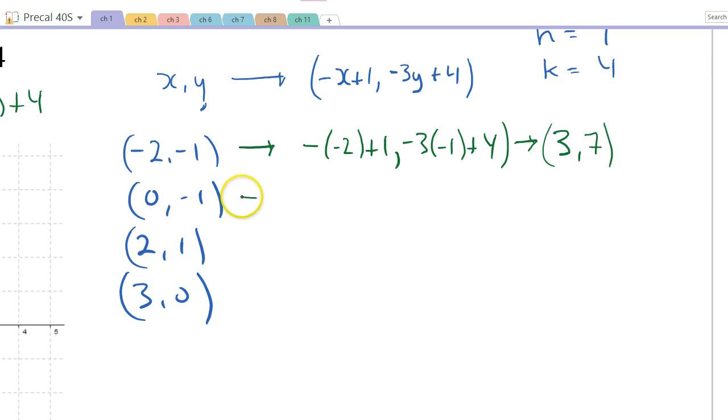Let's try the next one here. So we're going to have 0, so -0, so it's still 0, plus 1 for my x value. For my y value, I'll get -3 times -1 plus 4, just like before. So now I will get 0 + 1 is 1, comma, same y value, because my y value was the same before.